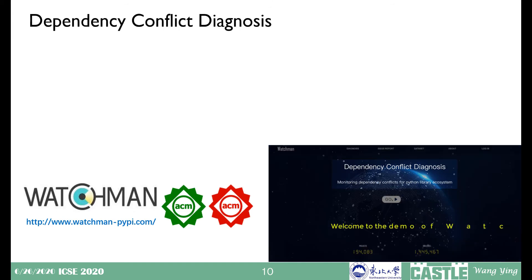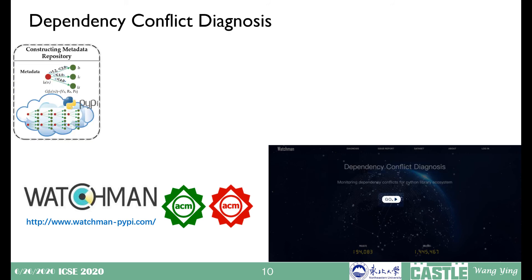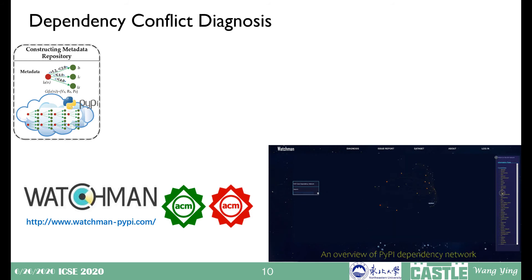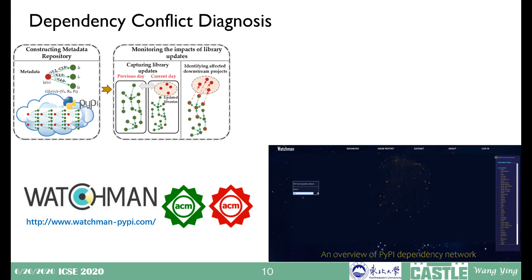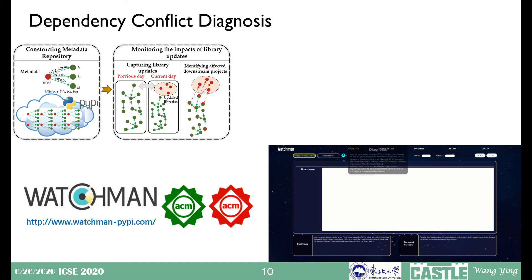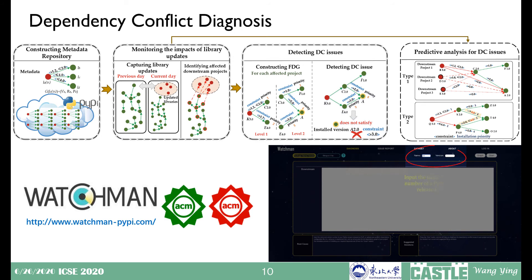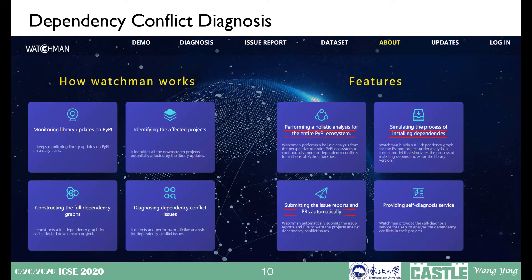Based on our empirical findings, we propose Watchman. It first constructs a metadata repository for all library sources on PyPI to enable analysis of interference between version constraints across downstream and upstream projects. Then, by continuously monitoring library release information on PyPI, it synchronously updates the metadata repository to precisely model the dependency relationships. For each captured library update, Watchman identifies all potentially affected downstream projects based on PIP's installation rules and performs automatic DC issue diagnosis. The main features of Watchman include performing a holistic analysis for the entire PyPI ecosystem, simulating the process of installing dependencies, submitting issue reports and PRs automatically, and providing a self-diagnosis service.